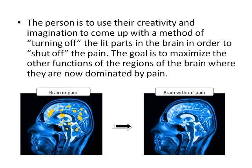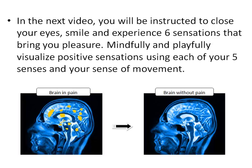The person is to use their creativity and imagination to come up with a method of turning off the lit parts in the brain in order to shut off the pain. The goal is to maximize the other functions of the regions of the brain where they are now dominated by pain. In the next video, you'll be instructed to close your eyes, smile, and experience six sensations that bring you pleasure.